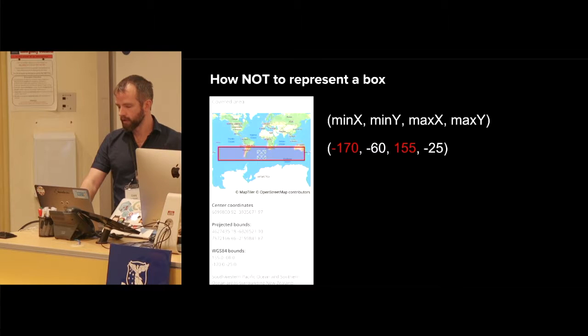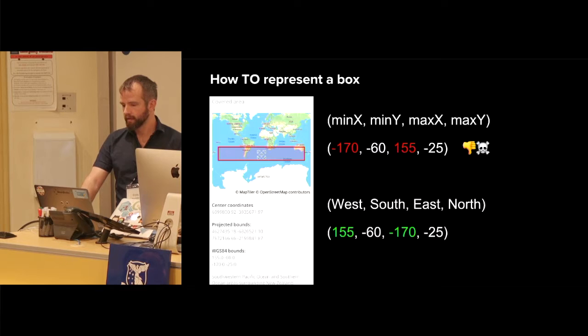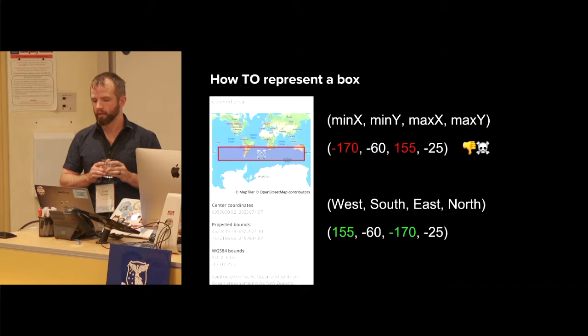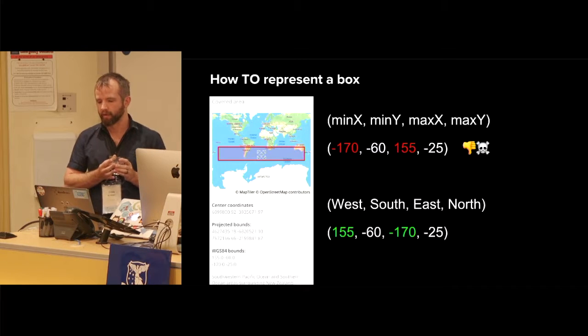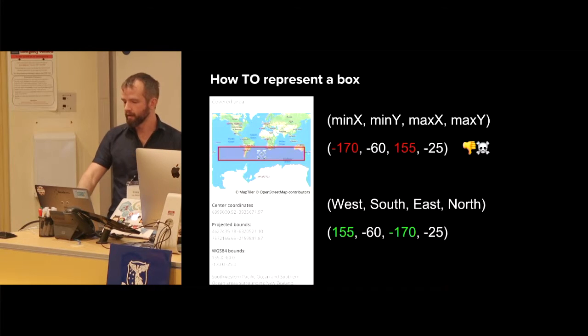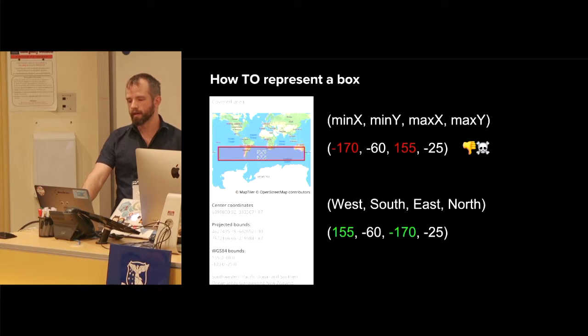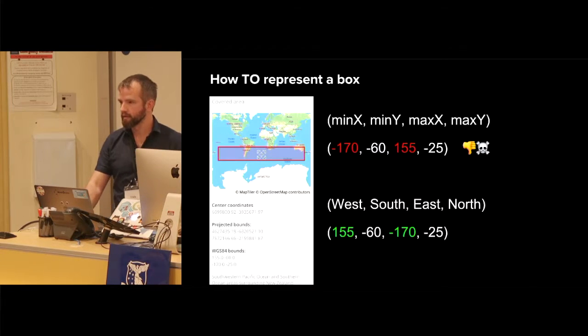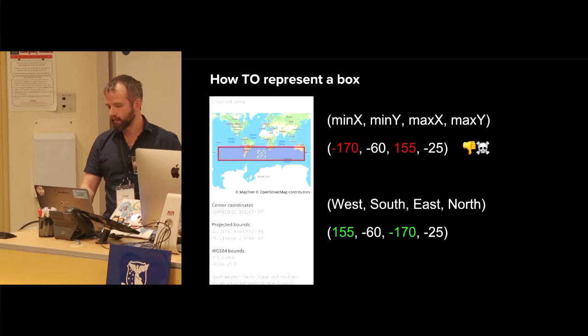Instead, I would say probably if you want to represent a box, maybe you should do it this way. You could represent it as west, south, east, north. Or left, bottom, right, top. If you do it this way, it's quite clear what the numbers mean. Then this box is no longer ambiguous. It represents one specific box on the Earth.